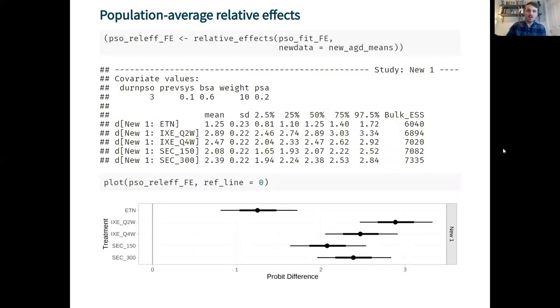I can then produce population average relative effects using the relative effects function. Here I'm specifying a new data frame for a new study population and if I omit this it will produce relative effects for each of the studies in the network. Then I can also plot this again using the plot method.